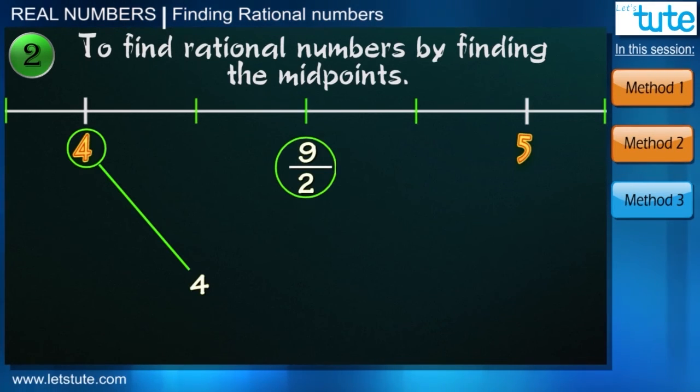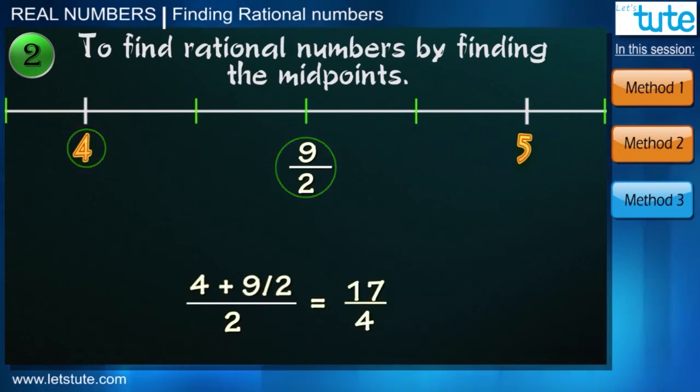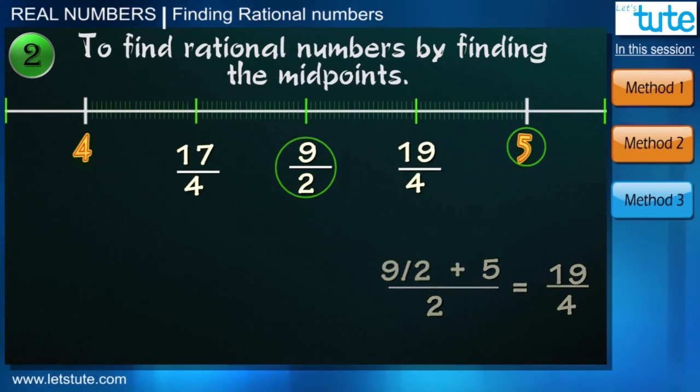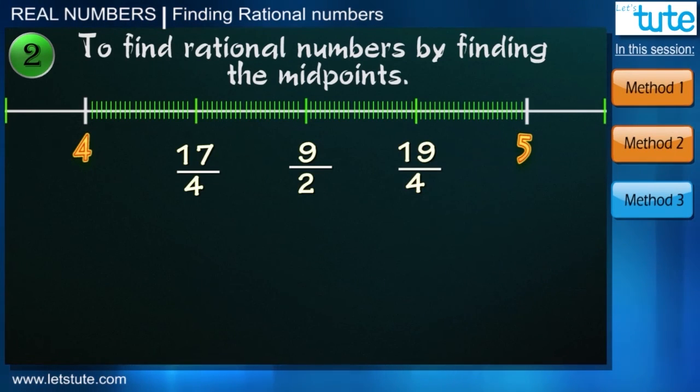So 9 upon 2 is a rational number exactly in the middle of 4 and 5. Then we take mid of 4 and 9 upon 2 which is equal to 17 by 4 and 5. And like this we can divide the sum of two numbers by 2 and can find many rational numbers between 4 and 5.